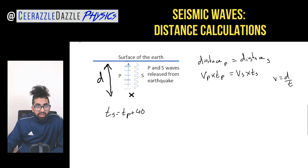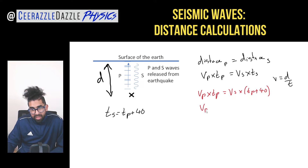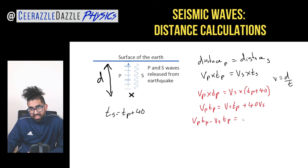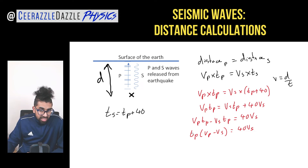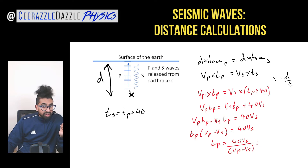Plugging that into the formula: Vp × Tp = Vs × (Tp + 40). Multiplying out: Vp·Tp = Vs·Tp + 40·Vs. Factorizing: Tp(Vp − Vs) = 40·Vs. Therefore, solving for Tp: Tp = 40·Vs ÷ (Vp − Vs).